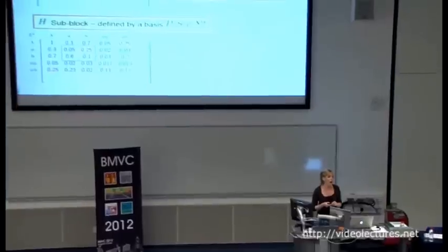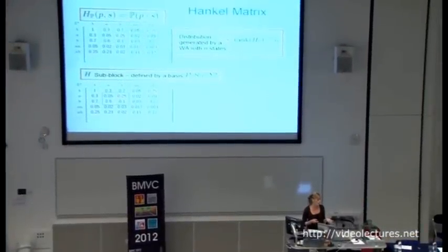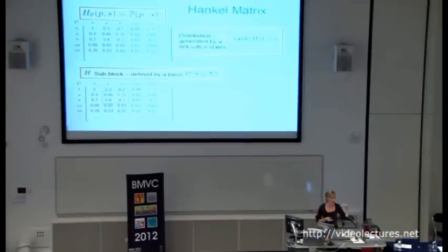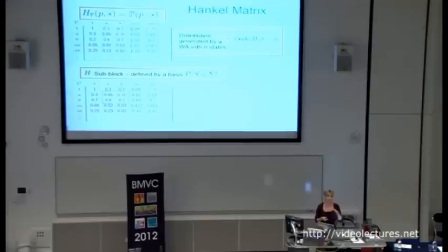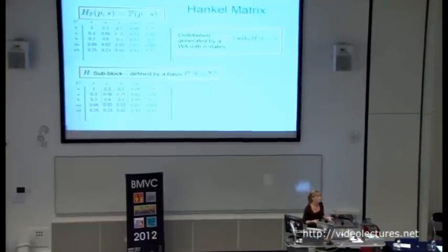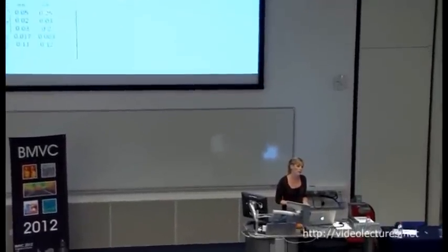To describe the main concepts of the algorithm, it's useful to define the Hankel matrix. For every possible prefix string we have a corresponding row, and for every possible suffix string a corresponding column. The entry corresponding to a prefix and suffix is simply the probability that the distribution gives to the concatenation of those two strings. This is in fact an infinite matrix, since we are modeling distributions over infinite sequences.